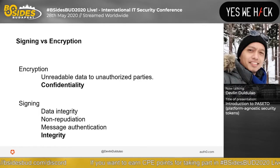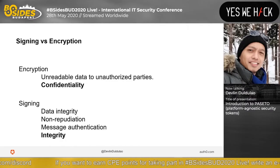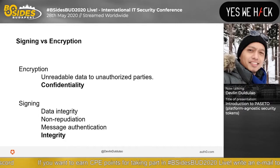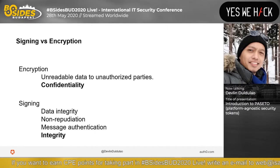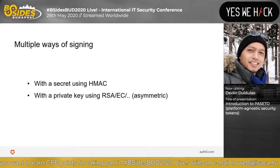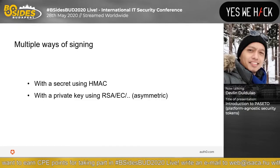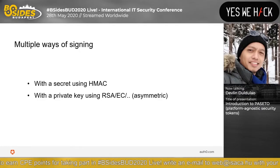Next is signing versus encryption. Encryption makes data unreadable to unauthorized parties — perfect for confidentiality. Signing is for data integrity, message authentication, and non-repudiation — for integrity, in short. There are multiple ways of signing: with a secret using HMAC, or with a private key using RSA, EC, and others.